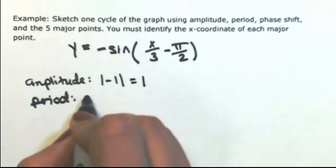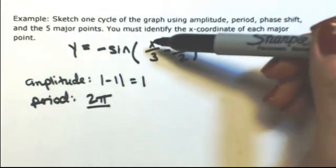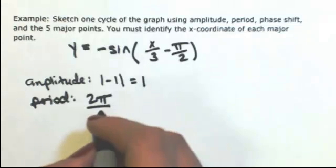Period is found by taking the original period of sine, which is 2 pi, and dividing it by whatever is in front of x, which in this case is 1 divided by 3, so 1 third.